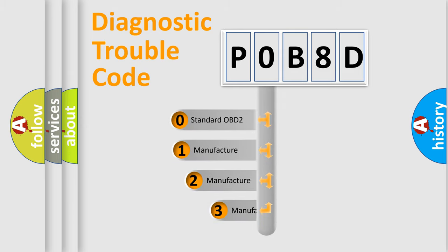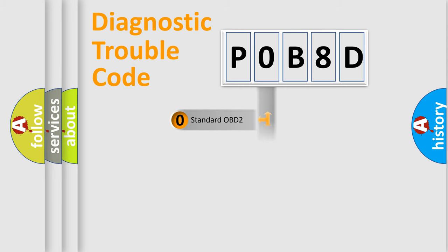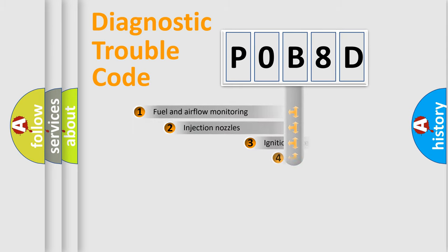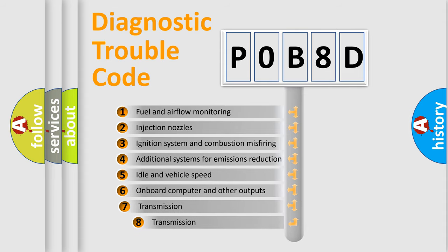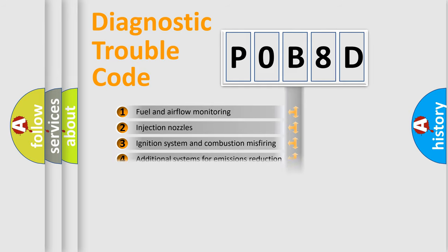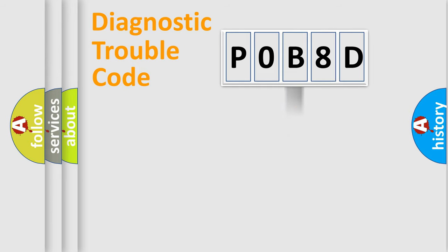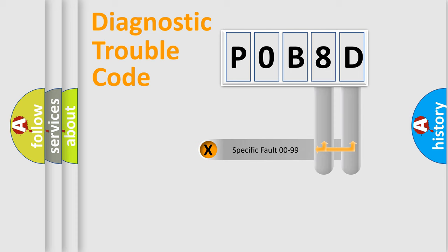If the second character is expressed as zero, it is a standardized error. In the case of numbers 1, 2, or 3, it is a more specific expression of a car-specific error. The third character specifies a subset of errors. This distribution is valid only for the standardized DTC code, and only the last two characters define the specific fault of the group.